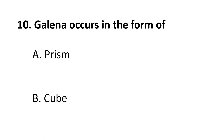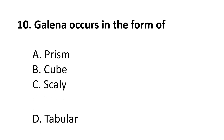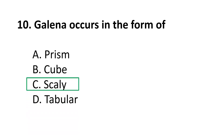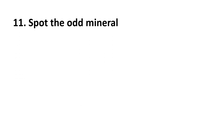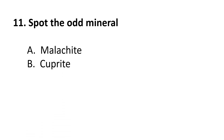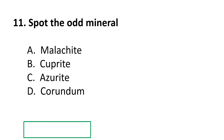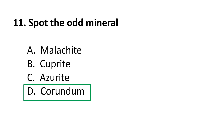Question 10: Galena occurs in the form of — A. prism, B. cube, C. scaly, D. tabular. The correct answer is B, cube. Question 11: Spot the odd mineral — A. malachite, B. cuprite, C. azurite, D. corundum. The correct answer is D, corundum, because malachite, cuprite, and azurite all contain copper, whereas corundum contains Al₂O₃.